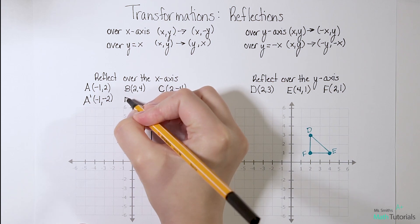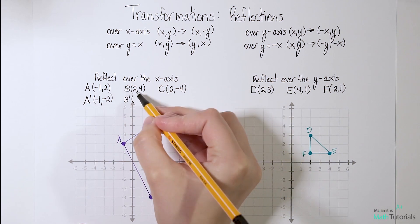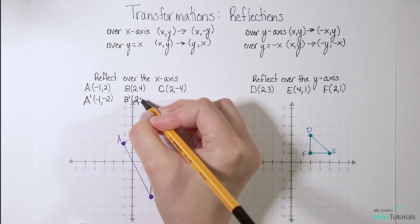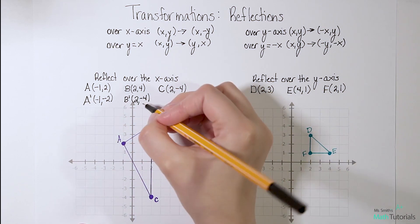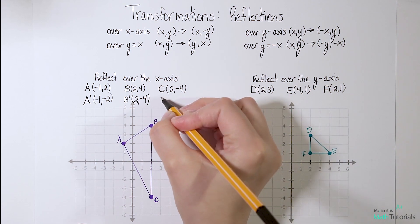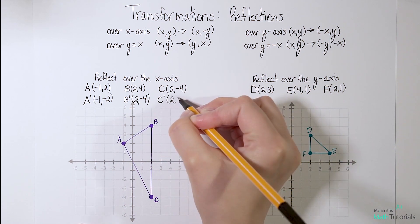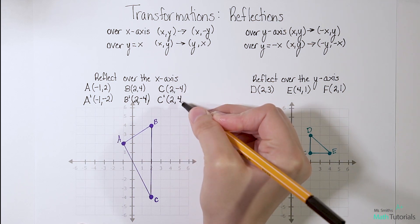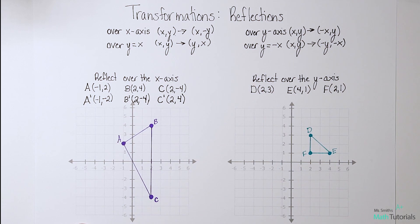Now for B prime, same rule: x will stay the same, y will flip sign. And now for C prime: x will stay the same, y will flip sign. Notice it was negative, now it's positive.